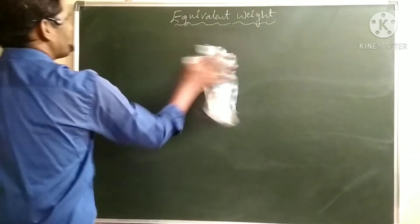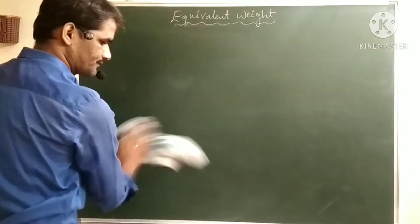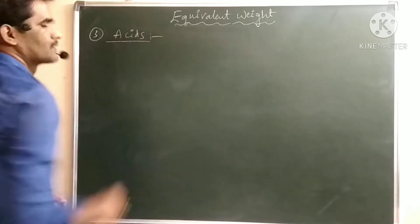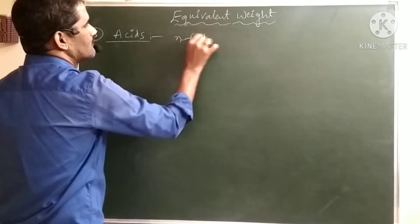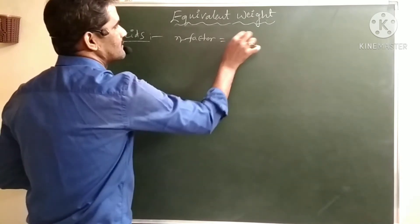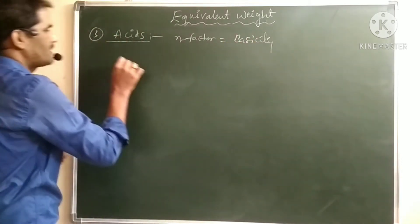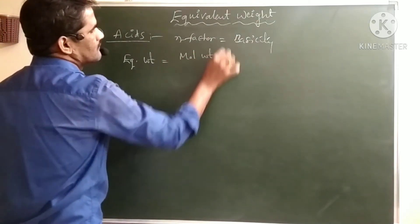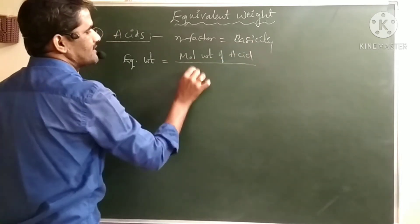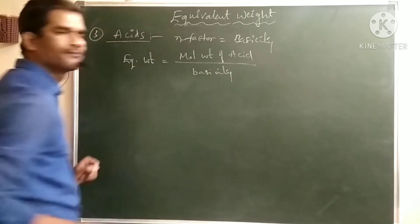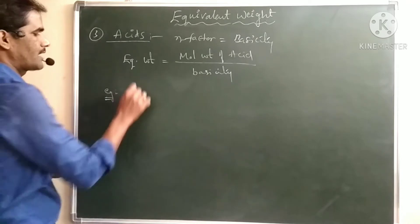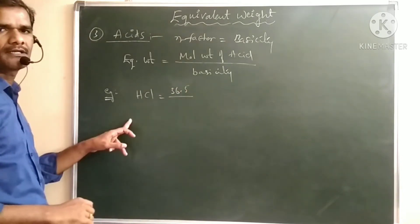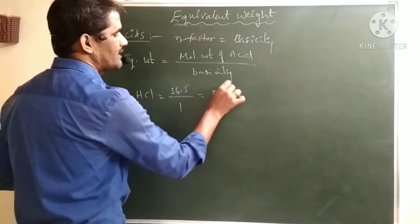Next, the n-factor for acids and bases. In the case of acids, n-factor is its basicity. So equivalent weight of an acid equals molecular weight of the acid divided by its basicity. For example, HCl has molecular mass 36.5 and basicity 1, so equivalent weight is 36.5.